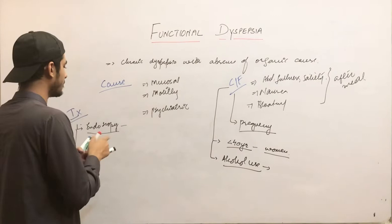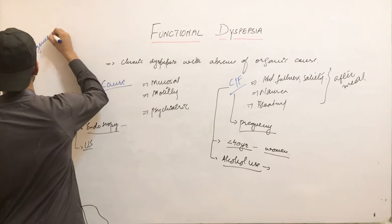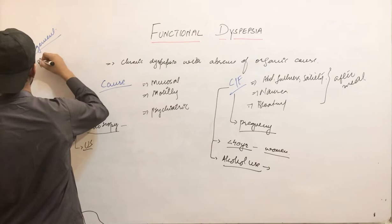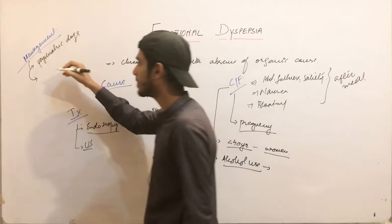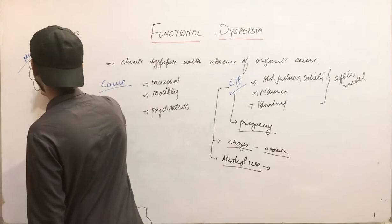Now how will you manage? Simply, management is according to the cause. If functional dyspepsia is due to a psychiatric disorder, you will give psychiatric drugs — anti-psychiatric drugs. If the patient has functional dyspepsia that may be due to increased acid production, you can give antacids.